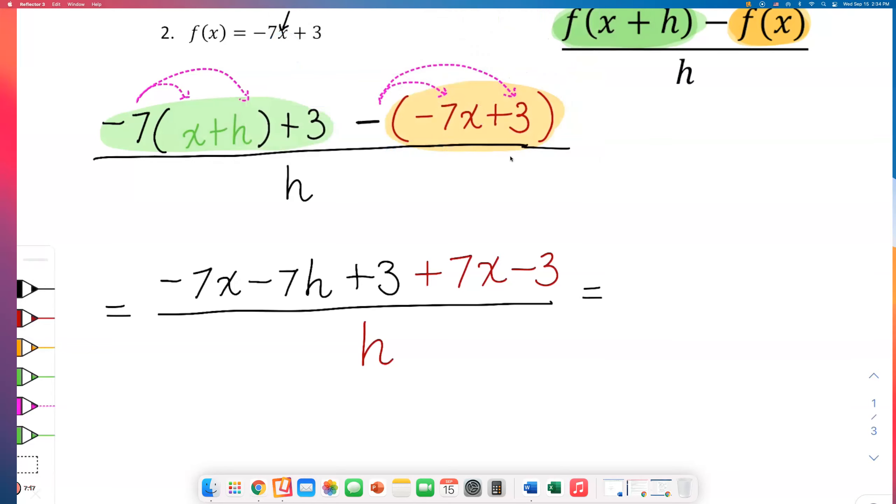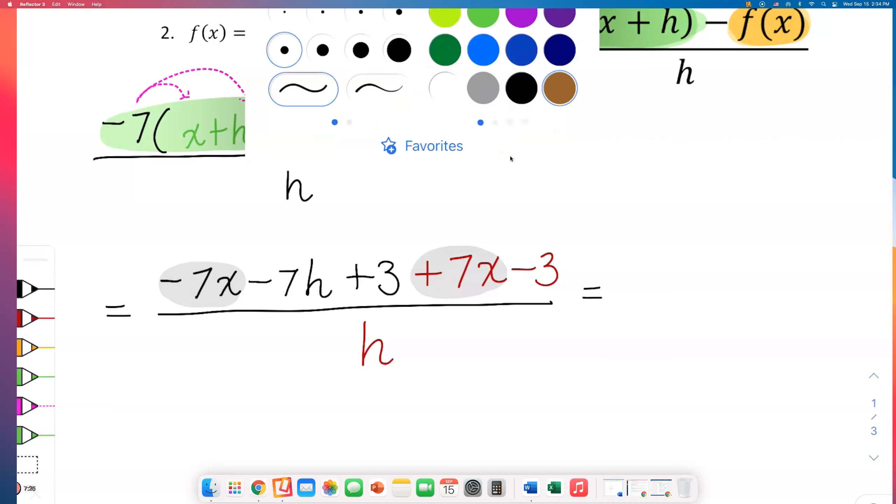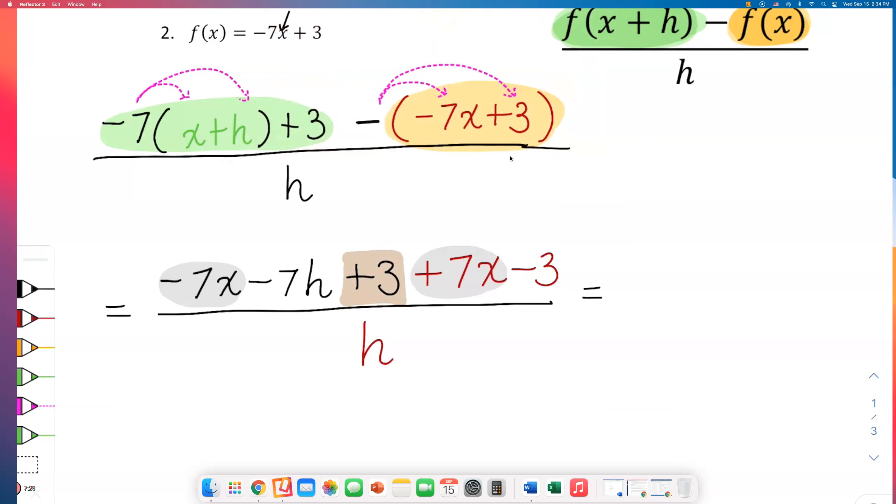Like I said, if things went well, a lot of things will cancel out. I have negative 7x and I also have positive 7x - those are opposites, so those are gone. I also have positive 3 which will cancel out with this negative 3. The only thing that's left on the numerator is minus 7h, negative 7h. In the denominator there is h, so we can cross out that h.